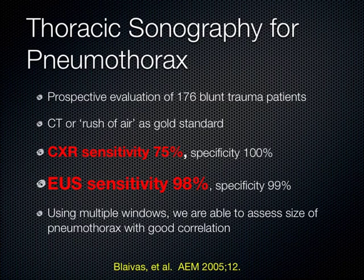We can very successfully use ultrasound for pneumothorax by interpreting artifacts to see if we have normal lung or not. Studies comparing CT or chest tube placement with rush of air versus ultrasound show chest x-ray is not as good as ultrasound — some studies put chest x-ray at a coin flip, around 40% sensitive for pneumothorax in the supine position, up to 75%. Either way, I wouldn't want to be in that 25% that they missed. If you see the lung moving underneath the chest wall, you don't have a pneumothorax — it's 98% accurate.